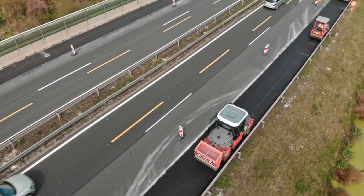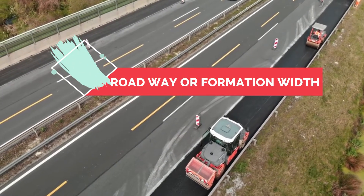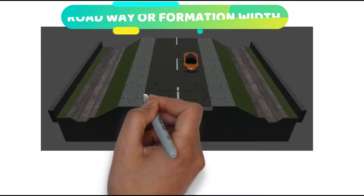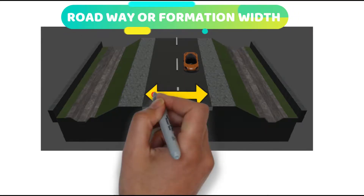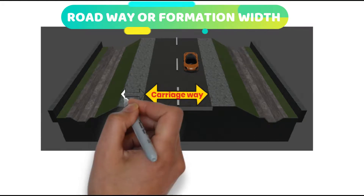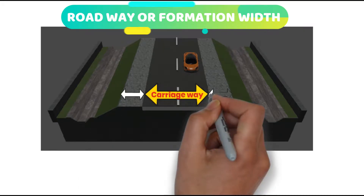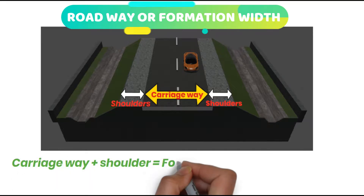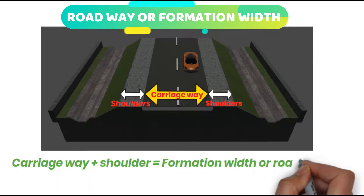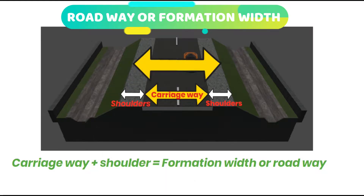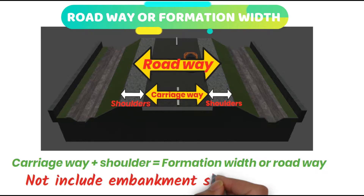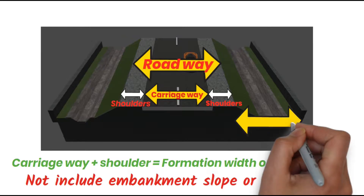Next is roadway or formation width. This is a typical cross-section of a road. The carriageway, which we discussed earlier, has shoulders on both sides. The carriageway plus shoulder together form the formation width or roadway. It does not include embankment slope or cutting — the embankment slope areas are on both sides.